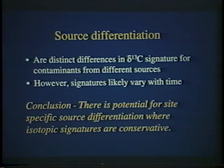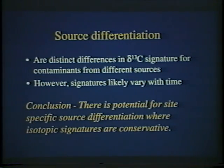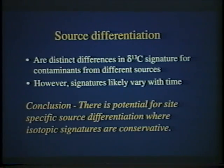The conclusion for this part of the talk is that there is potential to use stable carbon isotopes for site-specific source differentiation. However, there's another assumption implicit in that statement: the potential is there where isotopic signatures are conservative — in other words, where compounds retain distinct isotopic signatures indicative of their source or origin. Many subsurface processes have the potential to change or fractionate the isotopic composition of a compound and make it behave in a non-conservative way, and if that takes place we begin to lose the potential for source differentiation. Determining whether or not the isotopic composition of a given compound is conservative or non-conservative in the subsurface will be the focus of the rest of today's lecture.